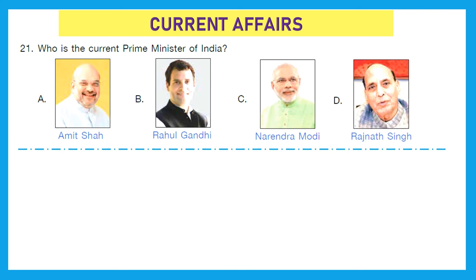Moving to our next section — that is Current Affairs. You need to be updated on the particular year's current affairs because questions come for the same year when you will be appearing for the exam. Question 21: Who is the current Prime Minister of India? Is it Amit Shah, Rahul Gandhi, Narendra Modi or Rajnath Singh? The right answer is Narendra Modi.